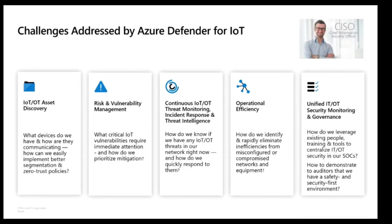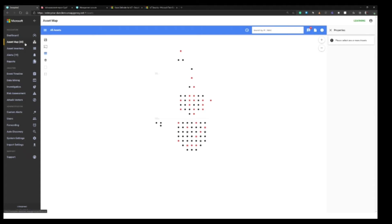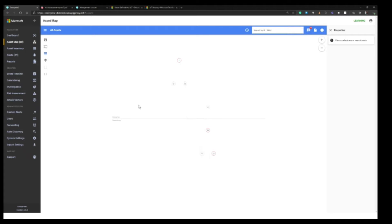Let me introduce Richard, the new chief security officer who would like to improve the security posture and IoT monitoring in some new production plants the organization has just commissioned. What challenges is Richard facing? First, Richard needs to address discovery: what devices are on the network, how they are communicating, and how easily can we implement better segmentation and zero trust policies? Let me demonstrate in the product — this is Richard's system which has been monitoring the network for the last couple of days and has mapped out the network in the plant.